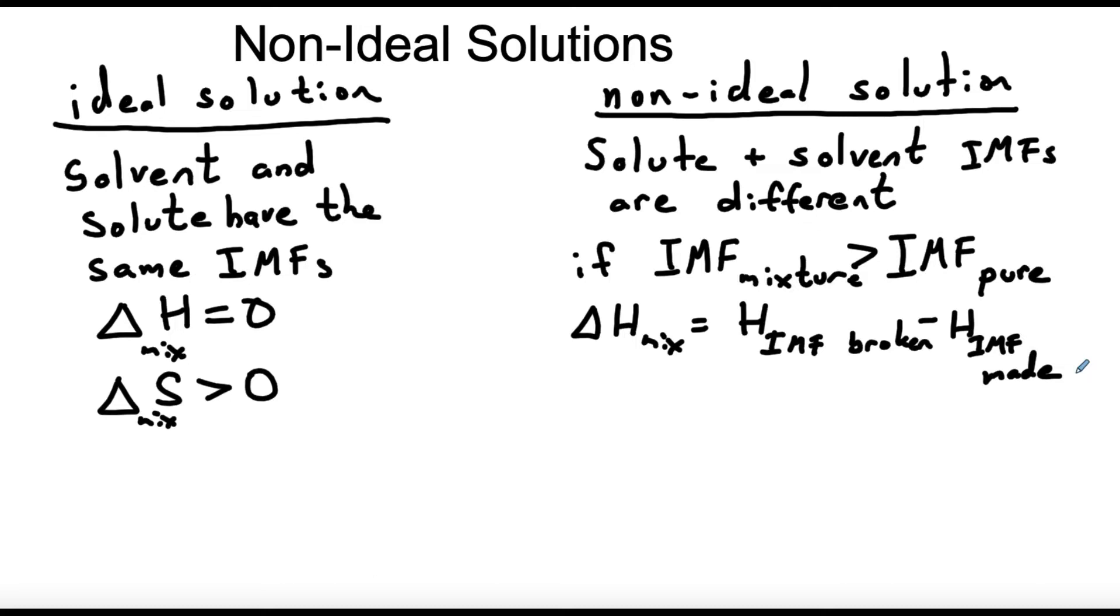We can figure out that enthalpy of mixing by remembering that the net difference between the IMFs that we break minus the IMFs that we make is going to give us our delta H. And we just said that in this scenario the IMFs of the mixture are stronger and those are the ones we're making. So in this case we'd be making stronger IMFs than the ones that we broke and so this would end up being a negative number since this term would be larger.